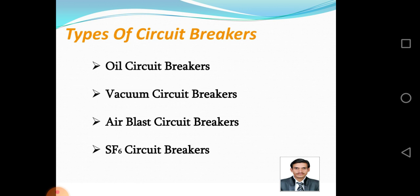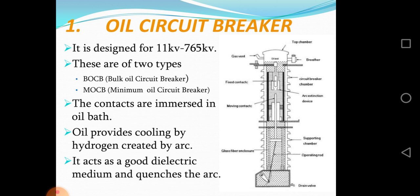Types of circuit breakers: there are many types, but here I will describe oil circuit breakers, vacuum circuit breakers, air blast circuit breakers, and SF6 circuit breakers. Oil circuit breaker is designed for 11 kV to 765 kV.